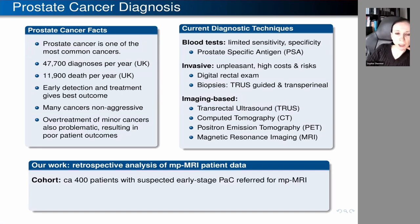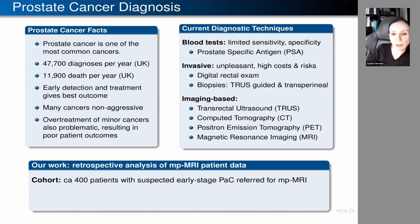We have a cohort of 300 to 400 patients who, over a period of several years, had scans at the imaging unit. All of these patients were referred for imaging because they were suspected of possibly having early-stage prostate cancer — not confirmed cancers, generally not advanced cancers, just a suspicion they might have prostate cancer.